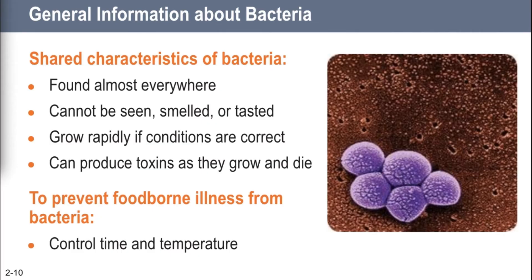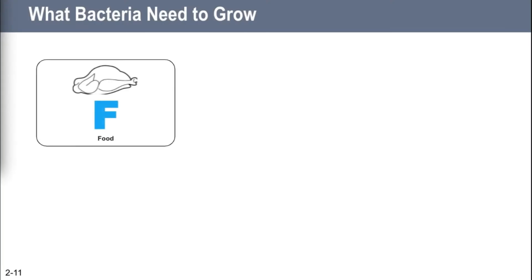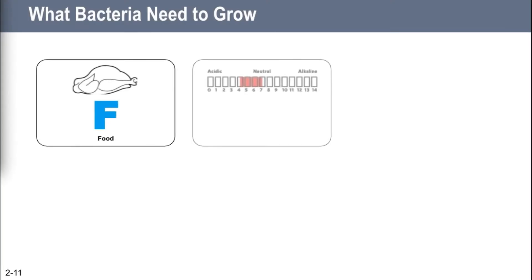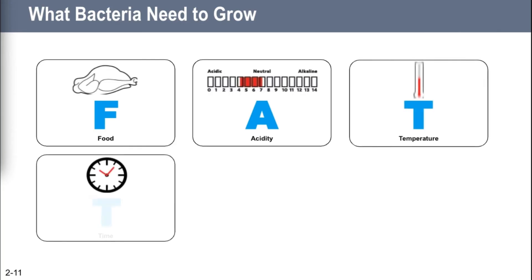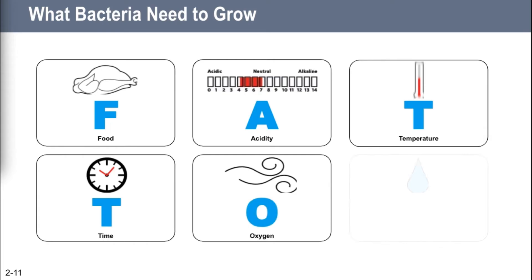To prevent foodborne illnesses from bacteria, there's one solution: control time and temperature. Keep that in your head forever. Bacteria need six specific things to grow fast, collectively called FAT TOM: Food, Acidity, Temperature, Time, Oxygen, and Moisture.